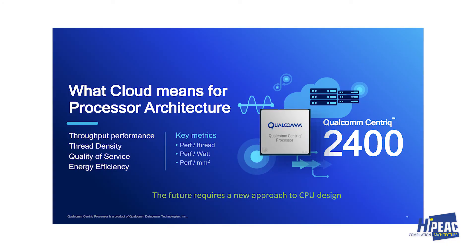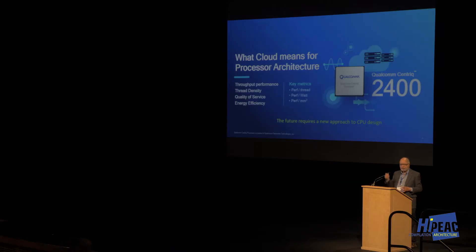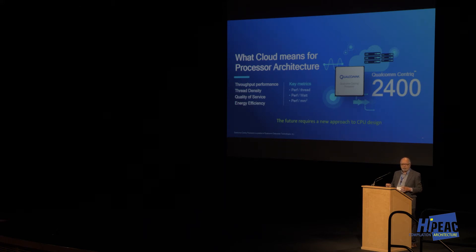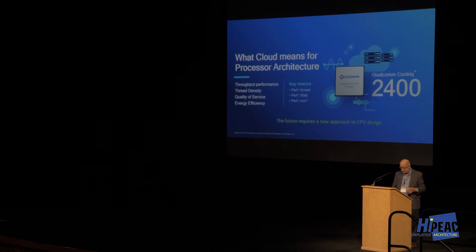If you're designing for the cloud, it's all about throughput performance — not single-thread performance. Thread density means you want as many high-performance threads within a certain power envelope as possible, and energy efficiency has to be designed in from day one. The key metrics we focused on are performance per thread, performance per watt, and performance per square millimeter.